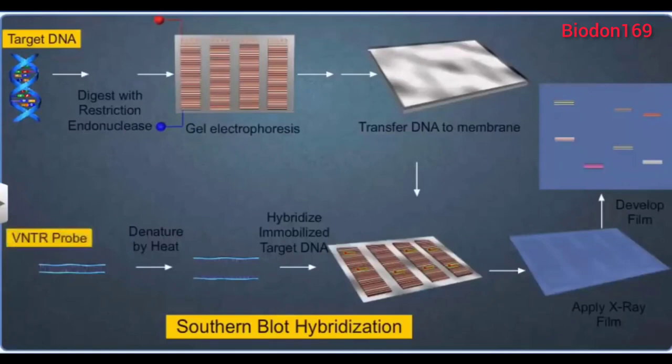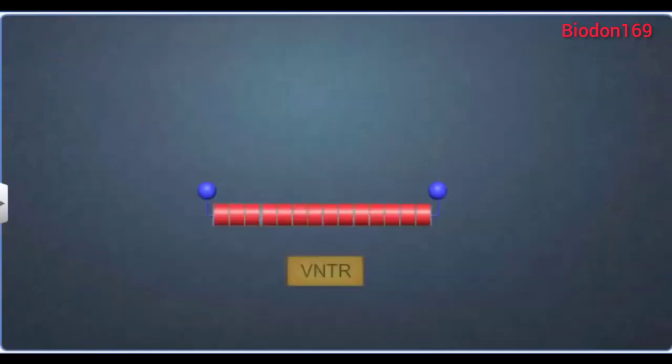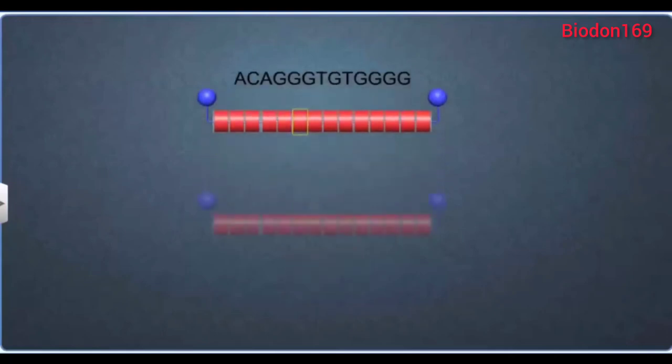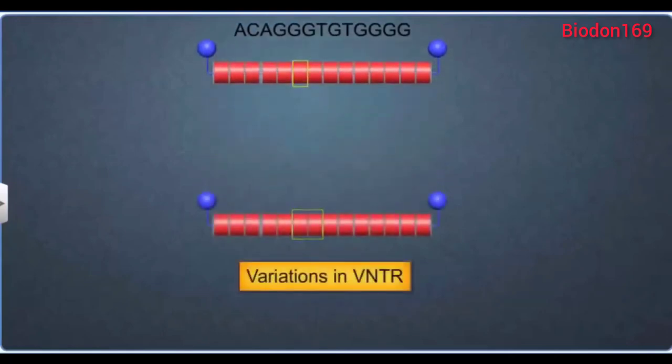VNTR is a small sequence of DNA arranged tandemly in several copy numbers, which varies from one chromosome to another in an individual. A very high degree of polymorphism is seen in the number of these repeats, due to which the size of the VNTR varies from 0.1 to 20 kilobases.